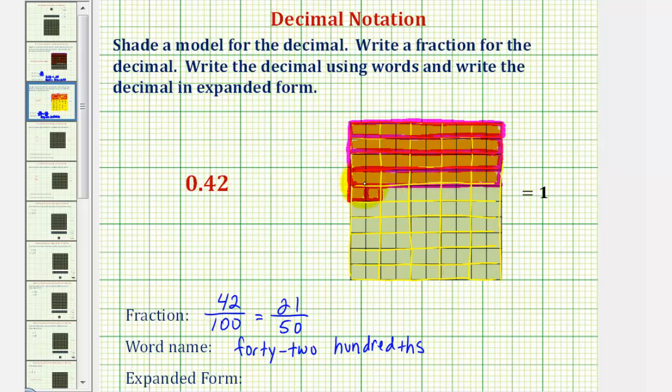Remember, each long is equal to one-tenth, so 0.42 in expanded form, we would have 0.4 for four-tenths, plus we have these two bits, where each bit is equal to one-hundredth, so we'd have plus two-hundredths. So plus 0.02. This would be the expanded form for the given decimal.